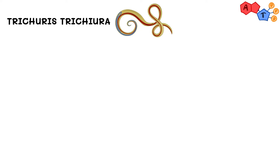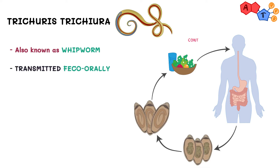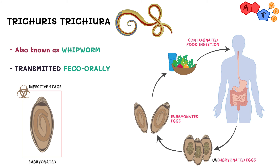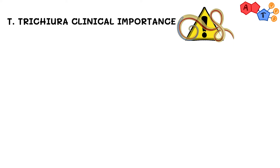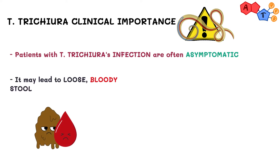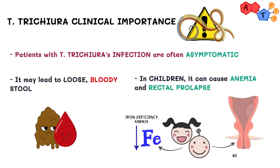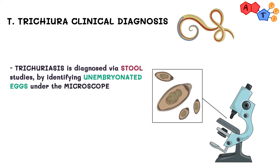Now for the last intestinal nematode of today, we'll be talking about Trichuris trichiura, also known as whipworm. For its life cycle, it's simple — it's transmitted through fecal-oral route, through contaminated food ingestion, or touching soil that has Trichuris trichiura eggs in it. The infective stage is embryonated eggs, whereas the diagnostic stage is unembryonated eggs. Embryonated and unembryonated simply mean having an embryo or not, respectively. Trichuris trichiura infection oftentimes goes unnoticed since it's asymptomatic. However, some patients might have loose stool with blood in it. In children, it can lead to anemia and rectal prolapse. For diagnosis, similar to most intestinal nematodes, stool examination under a microscope will show unembryonated eggs.